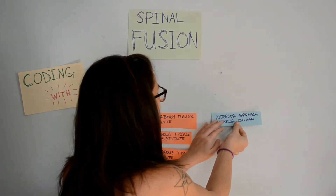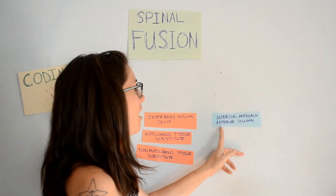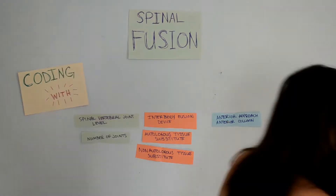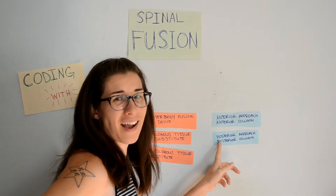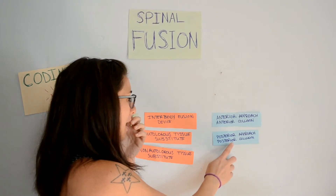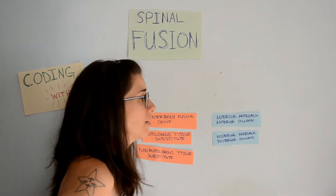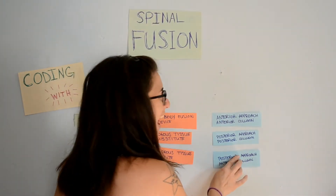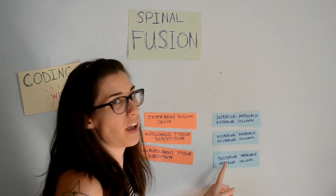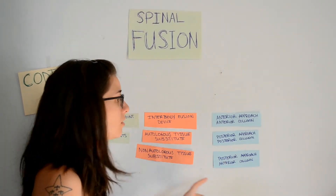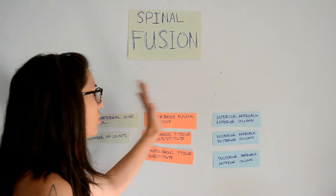The first qualifier you will see is anterior approach, anterior column — going in through the front of the spine and applying the device on the anterior column. Next is posterior approach, posterior column — coming in through the back and applying the interbody fusion device or tissue substitute on the posterior side of the spine. Finally, posterior approach, anterior column means coming in through the back but applying the device on the anterior, front side of the spine.